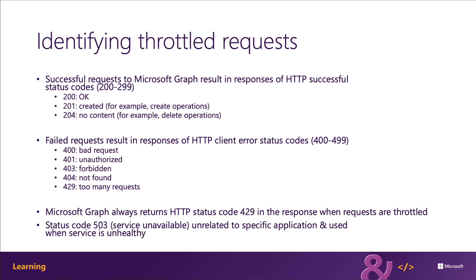The status code that's returned when things are being throttled is a 429, which means too many requests. All requests that are throttled by Microsoft Graph will always return a 429 status code when they're being throttled.